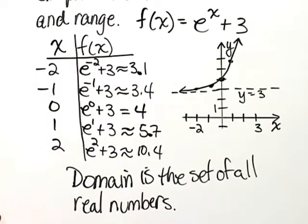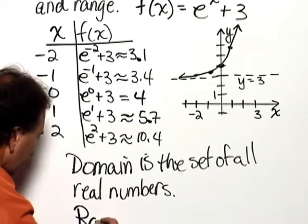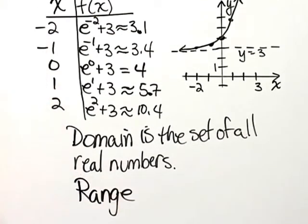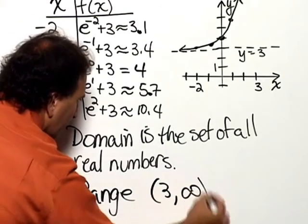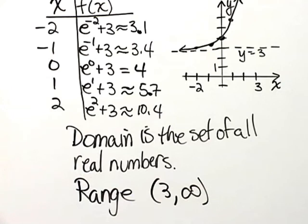The range, you'll see the y values do not go below 3. They actually don't even equal 3 or go below, but they're all above that. So, therefore, the range in interval notation would be 3 through infinity with parentheses.